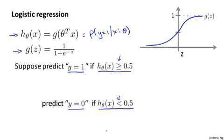I chose greater than or equal to here and less than here. If h of x is equal to exactly 0.5, we could predict positive or negative, but I put greater than or equal to here, so we default to predicting positive if h of x is 0.5 — but that's a detail that really doesn't matter that much. What I want to do is understand better when exactly h of x will be greater than or equal to 0.5, so that we'll end up predicting y is equal to 1.